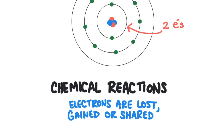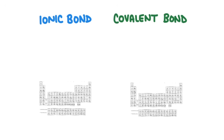During a chemical reaction, the valence electrons will be lost, gained, or shared by atoms. There are two types of bonds that will form between atoms: ionic bonds and covalent bonds.